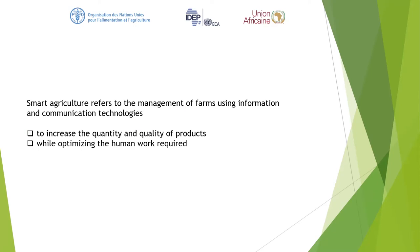Smart agriculture refers to the management of farms using information and communication technologies — ICT for ag. It's really using ICT to do farming in a smarter way. The importance and value of smart farming is to increase the quality and quantity of products while optimizing the human work required. In other words, the technologies do more of the work and you optimize the human interaction, making farming easier and smarter.